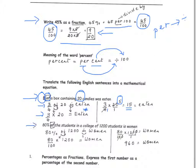Remember that a percent is nothing but a fraction. In this case, we have 80% of the students and the total number of students is 1,200. This is the same as saying a fraction of the whole, which is 1,200. The word 'of' translates to multiplication. 80%, as we've seen, is 80 over 100, times the total, which is 1,200.